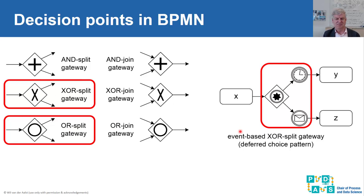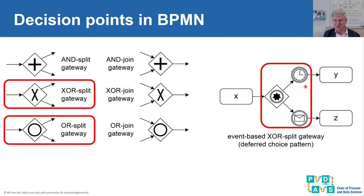In BPMN there are also other types of choices, such as the deferred choice pattern from the well-known workflow patterns, where the choice is driven by events rather than a variable. For example, instead of 'if age is above 50 do Y, otherwise do Z,' there is a race between a clock ticking and a message arriving. If people reply within two weeks we execute Z; if they do not reply within two weeks we execute Y. We will abstract from these cases and focus on pure XOR and OR gateways.